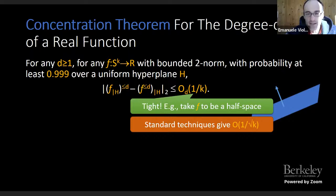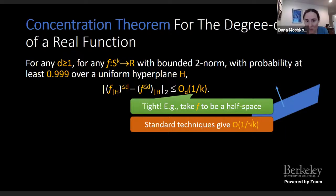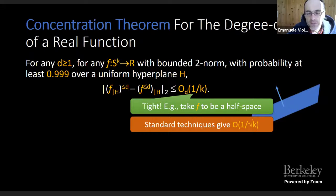Question: Is this result available over other domains? This is over the k-dimensional sphere or Gaussian space. Is something like this over the hypercube known? Answer: In the hypercube, we call such things low-degree testing theorems, and they are known with the same 1/K parameter. When talking about low-degree testing theorems, we usually consider much lower-dimensional local parts. Here we only needed quite high-dimensional ones.